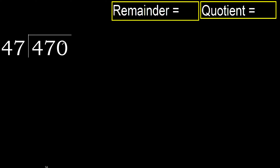470 divided by 47. 4 is less, therefore next. 47 is not less, therefore we work with 47. 47 multiplied by which number is nearest to 47, but not greater?